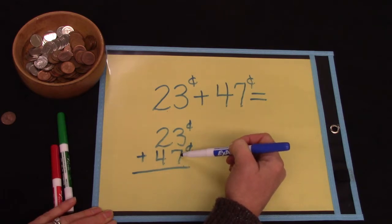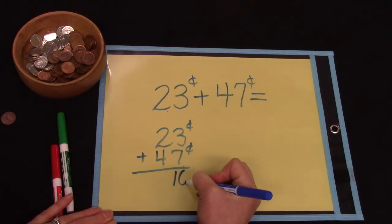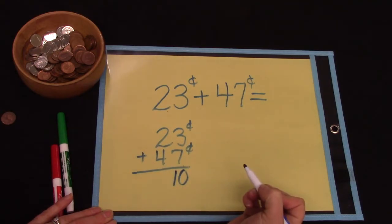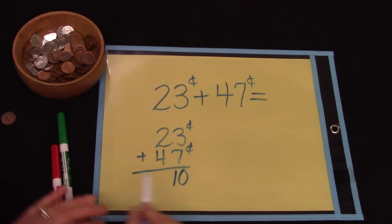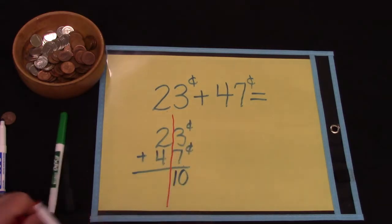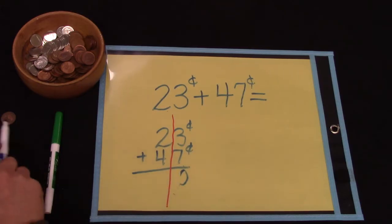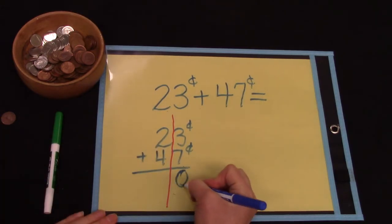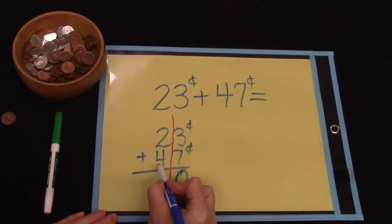We have 3 plus 7. Well we know that 3 plus 7 is 10, but we've learned that we cannot put two digits in one column. We can only put one digit in a column, so we're going to put the digit that's in the ones place here and our other number we're just gonna sneak it right in there.